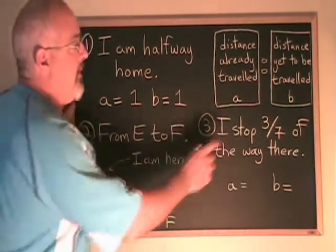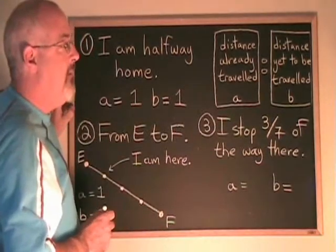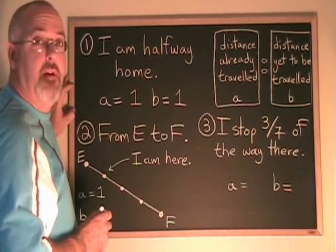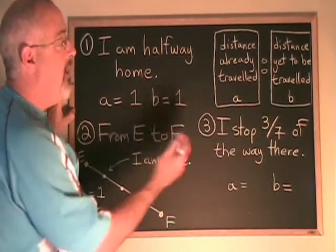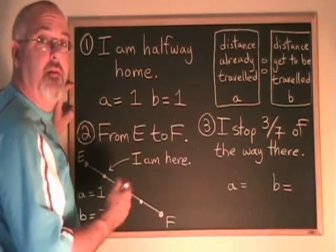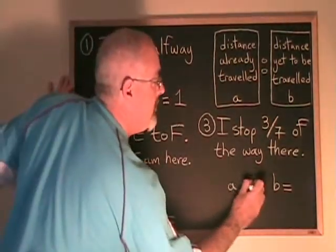What do I do when I see a fraction, and I am told I have stopped three-sevenths of the way there? My a is the three. The distance I have already traveled is equal to three.